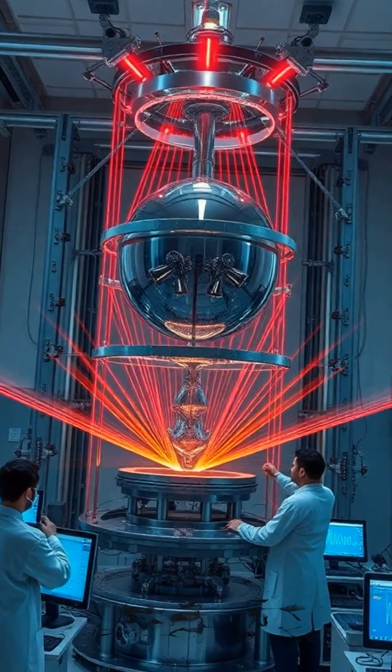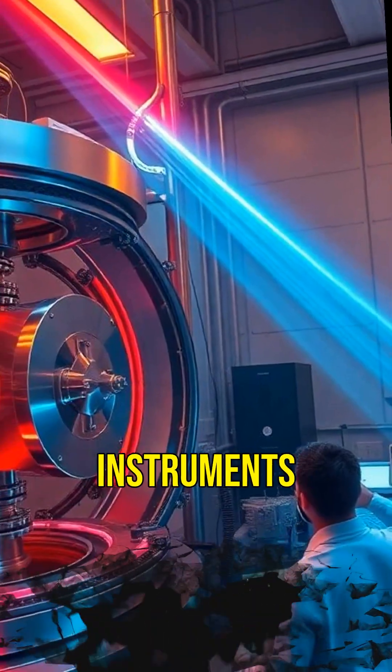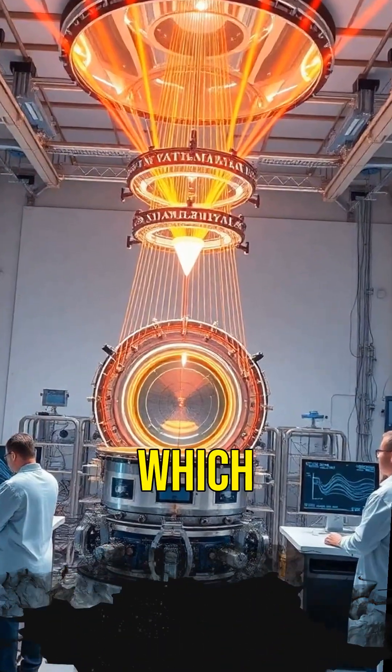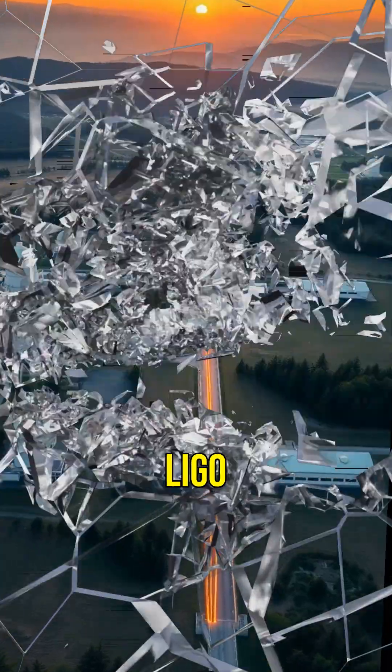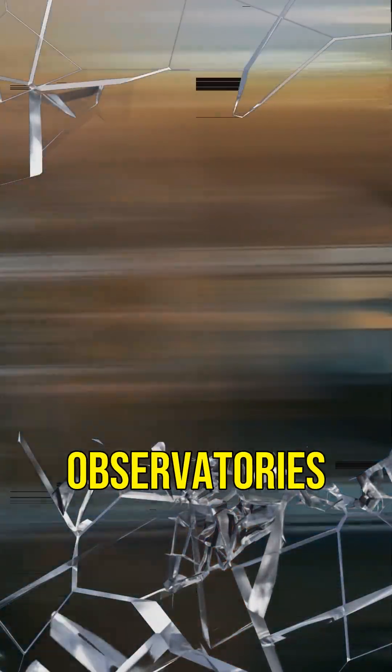How do we detect them? Using incredibly precise instruments called interferometers, which measure tiny distortions in spacetime as waves pass through. LIGO and VIRGO are two of the main observatories.